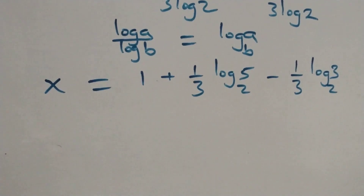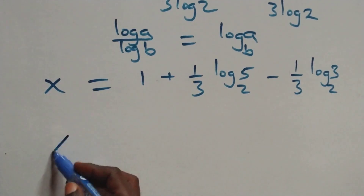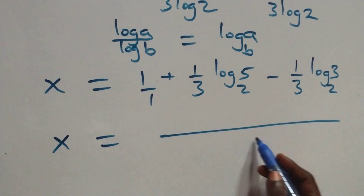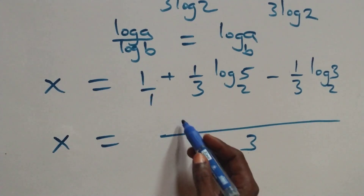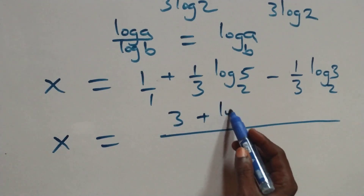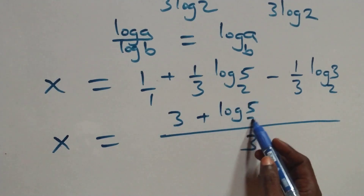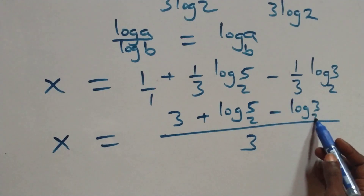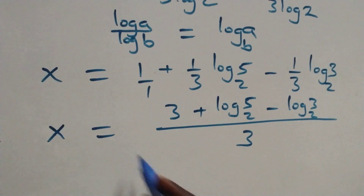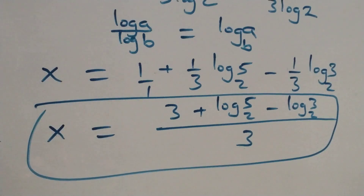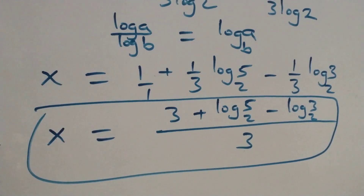And also here we bring this together as one fraction. We have x equals to — treating 1 as 3 over 3 — this becomes 3 plus log 5 base 2 minus log 3 base 2, that is, the value of x is 3 plus log 5 base 2 minus log 3 base 2, all over 3.